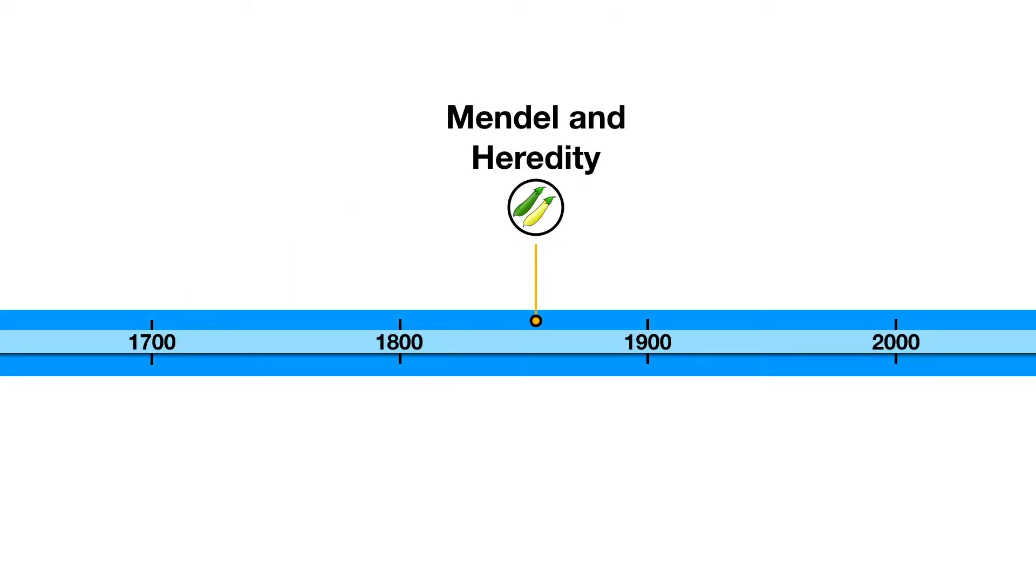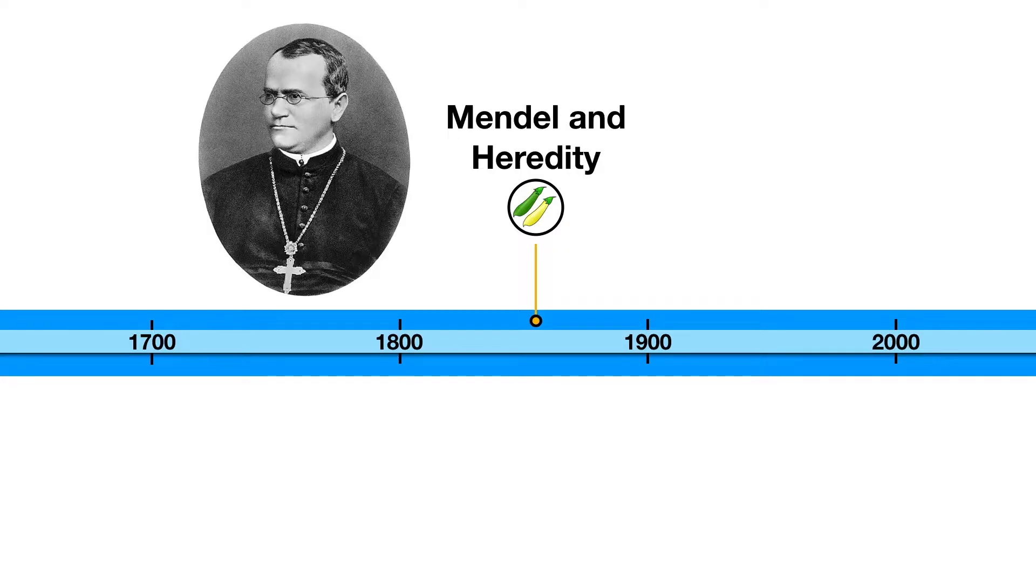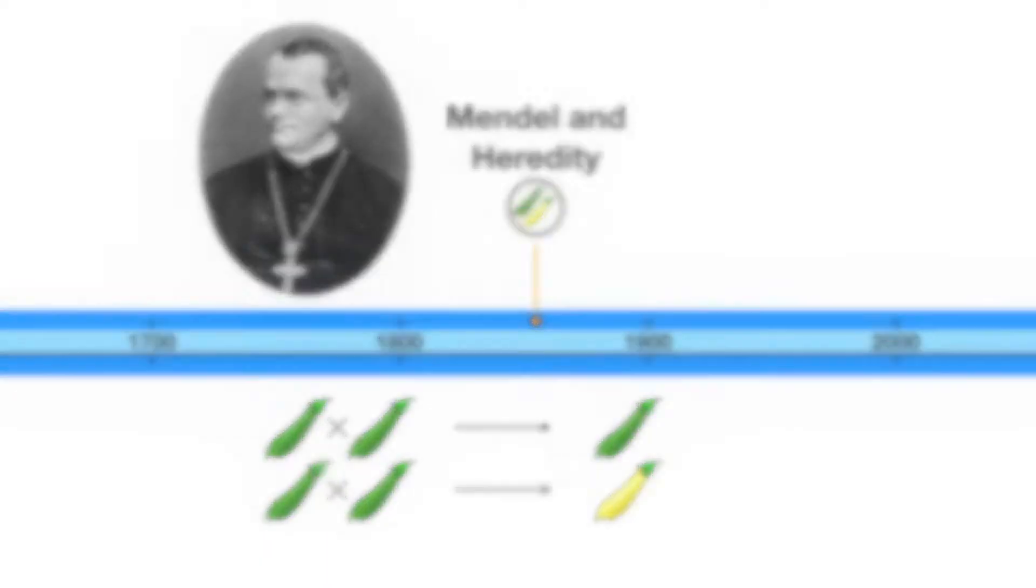In the midst of this confusion lived a young monk named Gregor Mendel. He planted thousands of pea plants and spent years recording what type of seeds and flowers grew in his garden. His conclusions were revolutionary to the thinking of the time and became one of the most famous science experiments in history.